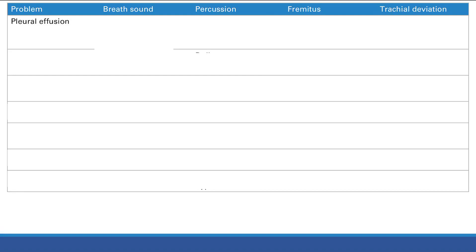Fremitus is similar but slightly different — it tests how sound travels through different media. Air and fluid give you decreased fremitus because sound doesn't travel well through them. Increased fremitus comes from denser or inflamed lung tissue, which conducts sound better. Decreased fremitus results from air or fluid in the lungs, causing decreased lung density and poor sound conduction.